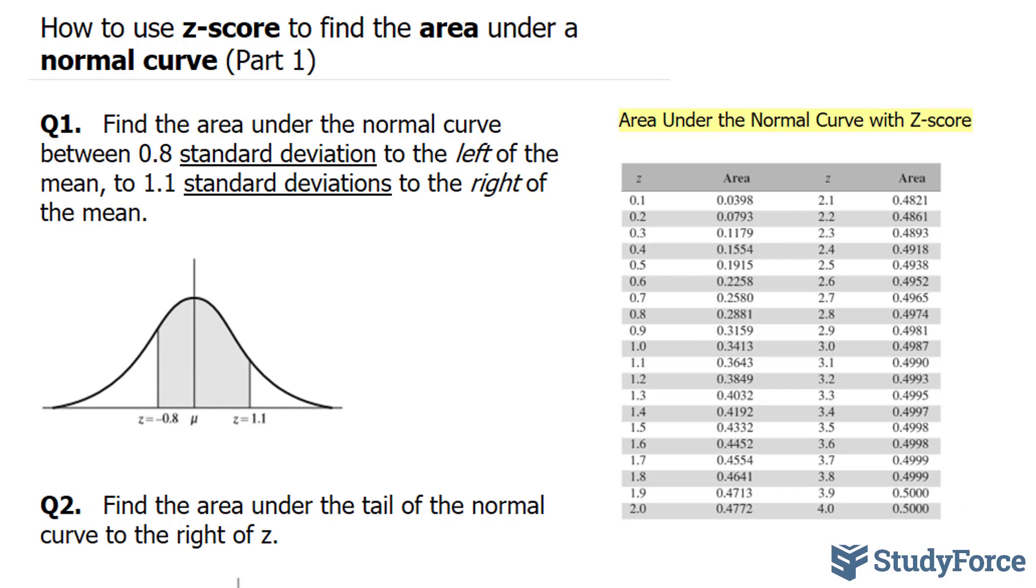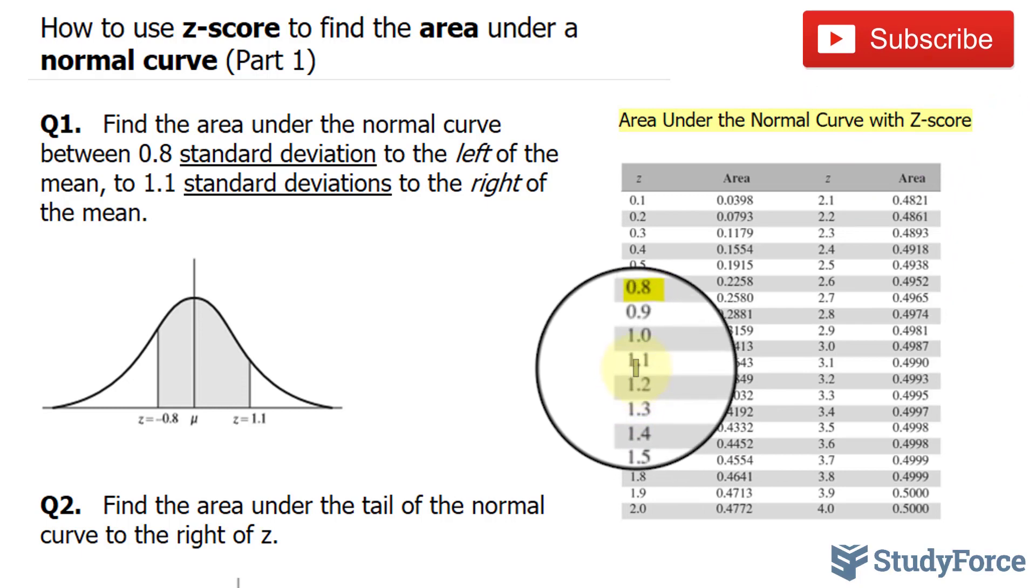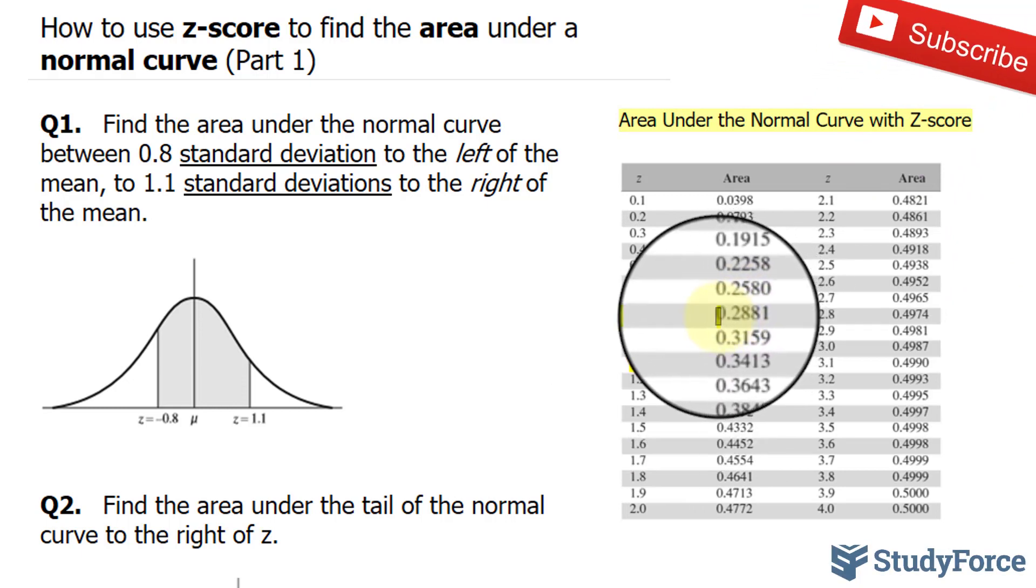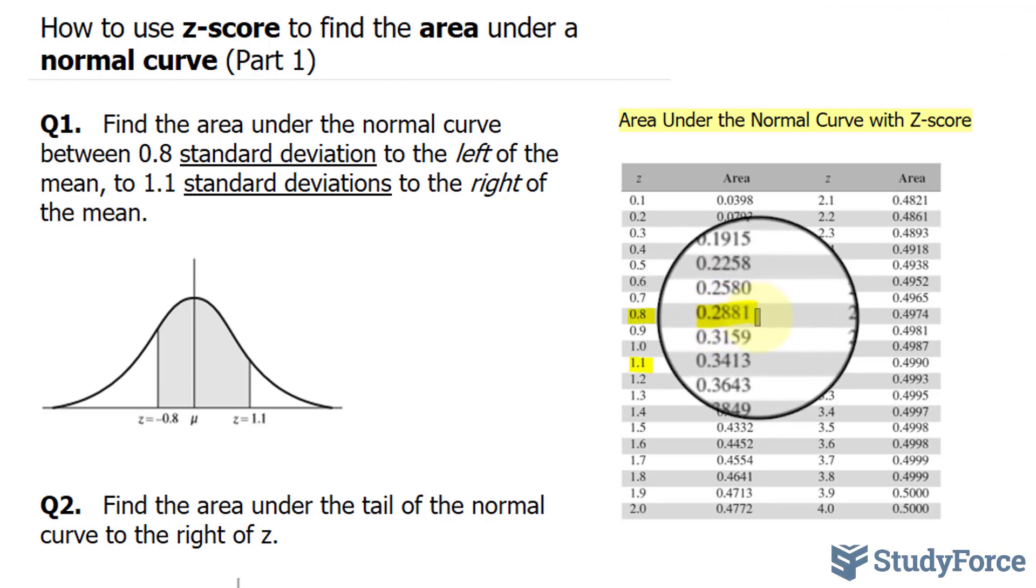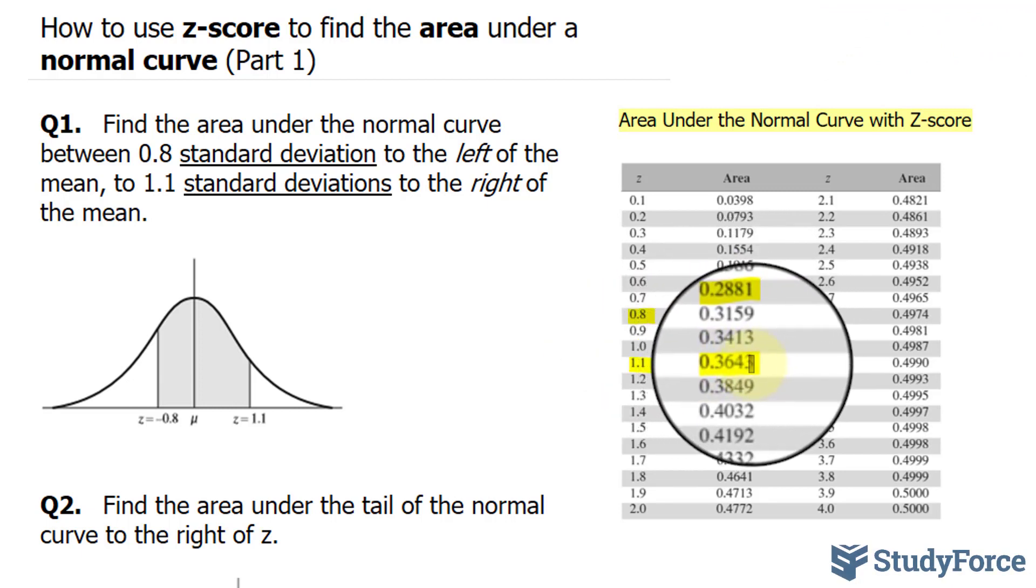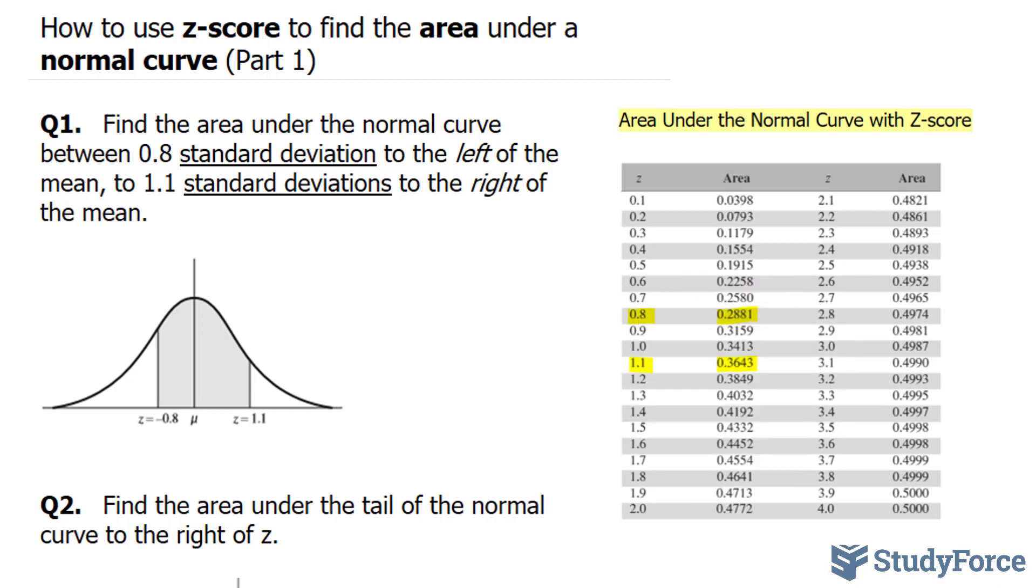So what we do is use a table and in our case we have 0.8 and 1.1. The score for 0.8 is 0.2881 and for 1.1 we have 0.3643. What we have to do is simply add these two numbers up and this will give us the area shaded. Let's go ahead and do that.